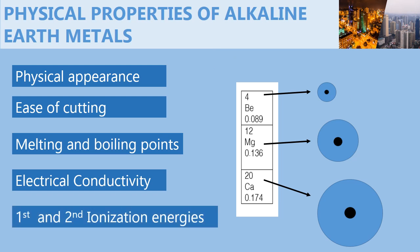The first ionization energy is the minimum amount of energy required to remove the first electron from the outermost energy level of an atom in the gaseous state. Since alkaline earth metals have two electrons in their outermost energy levels, they have both a first ionization energy and a second ionization energy. The first is for the removal of one electron and the second is for the removal of the second electron from the outermost energy level in the gaseous state.